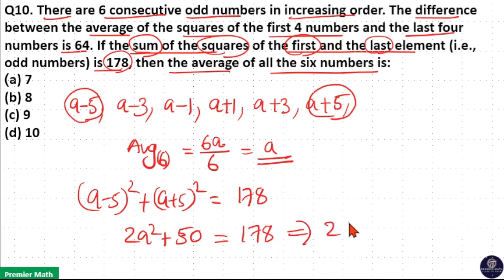Means 2a² = 178 - 50 = 128. 2 goes 64 times in 128. So a² = 64, means a = 8. So option b is your answer.